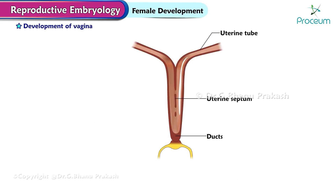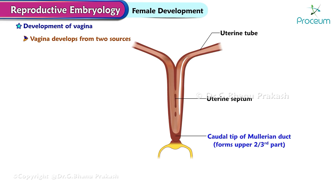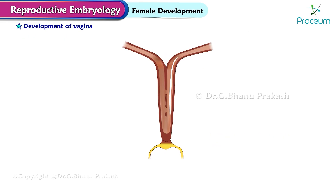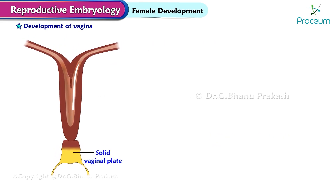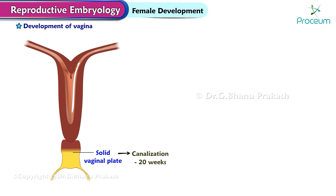Development of the vagina: the vagina develops from two sources. Mainly from the Müllerian duct, which forms the upper two-thirds, and partly from the urogenital sinus, which forms the lower one-third. These together form a solid vaginal plate. Canalization of the solid vaginal plate occurs at 20 weeks.